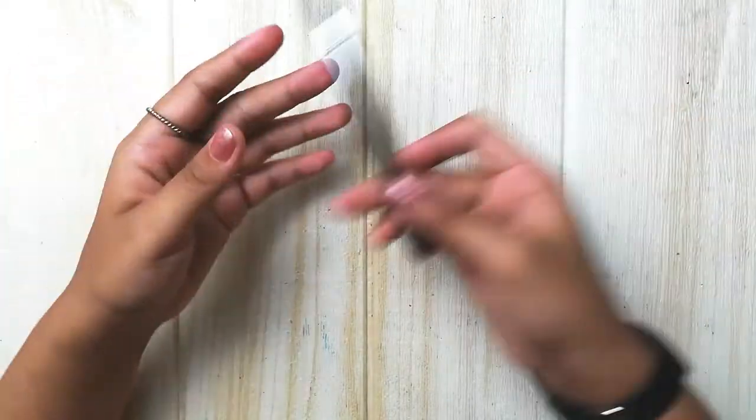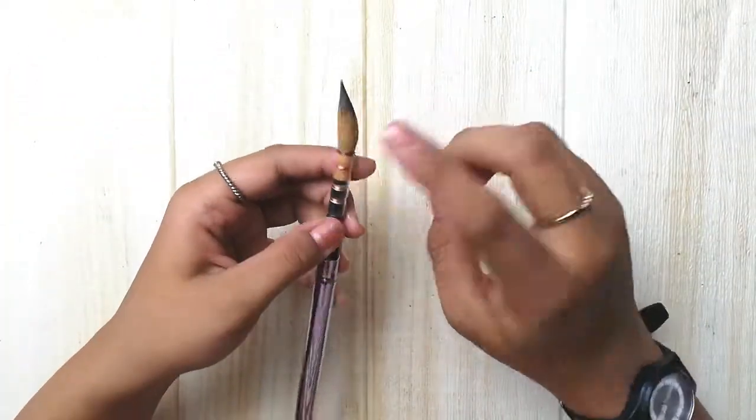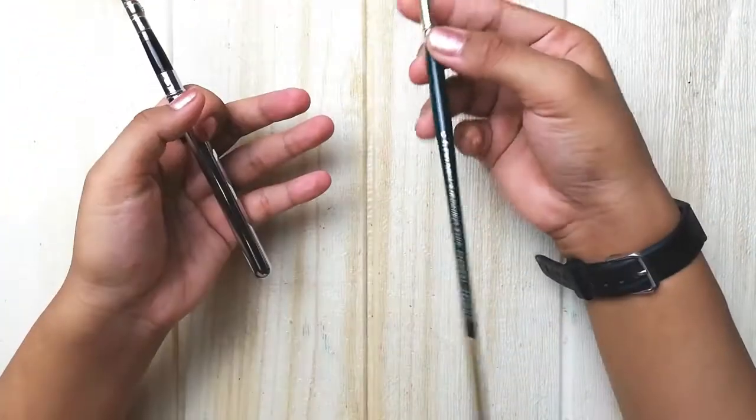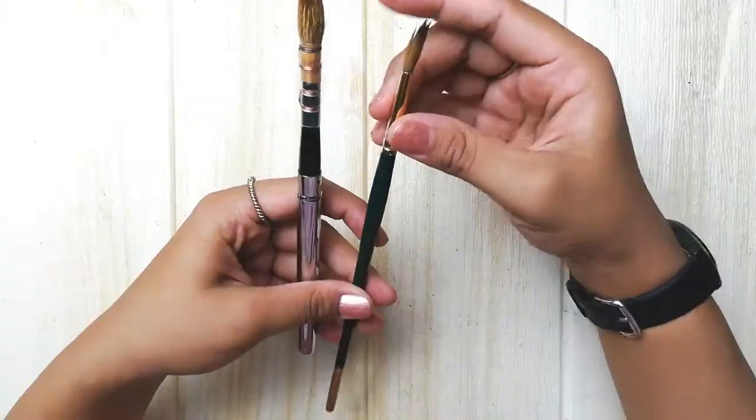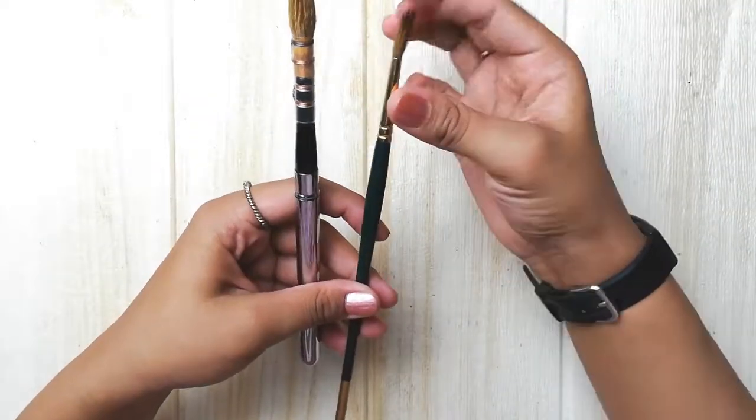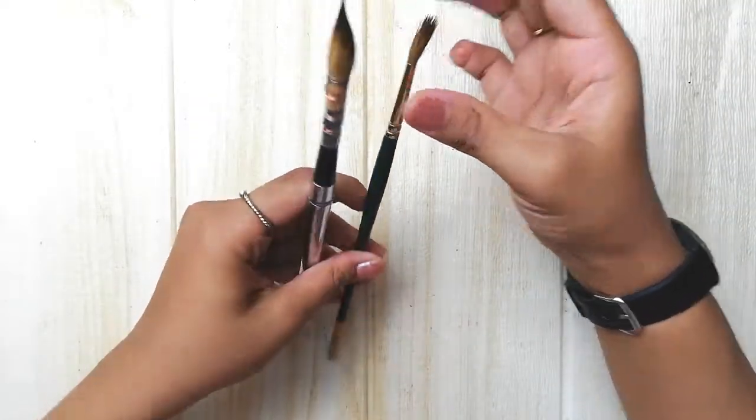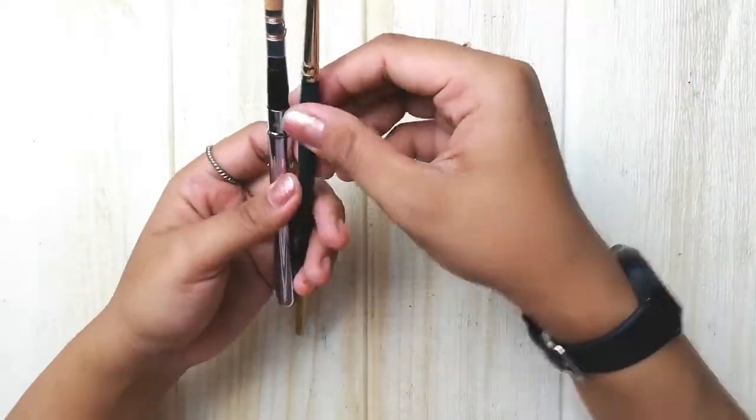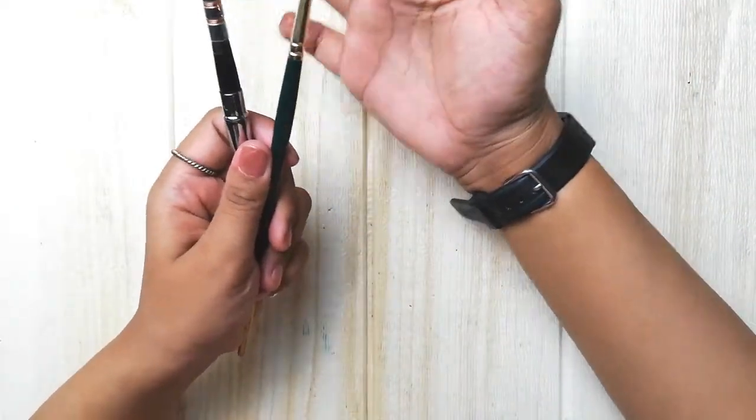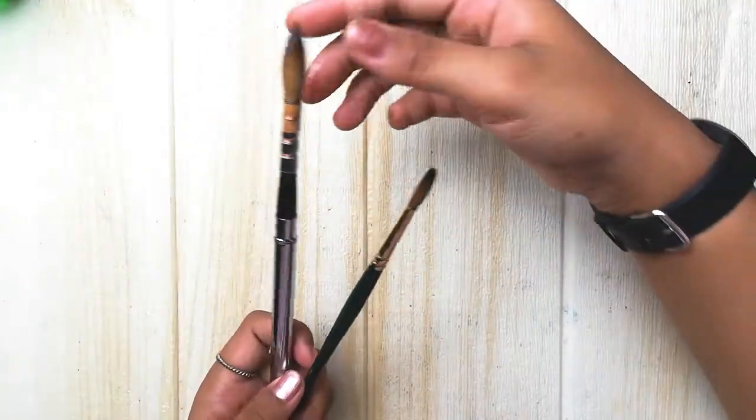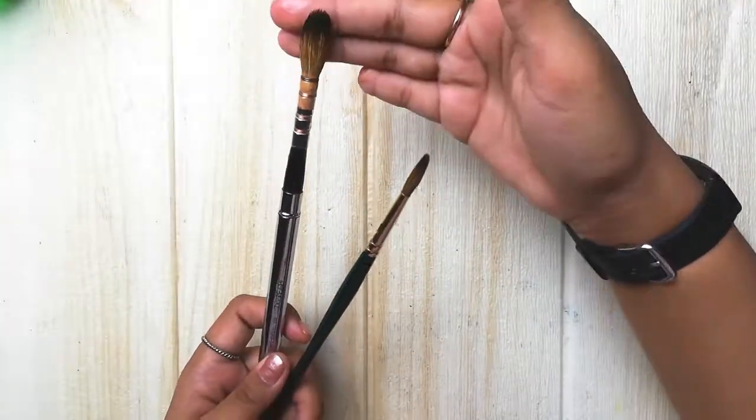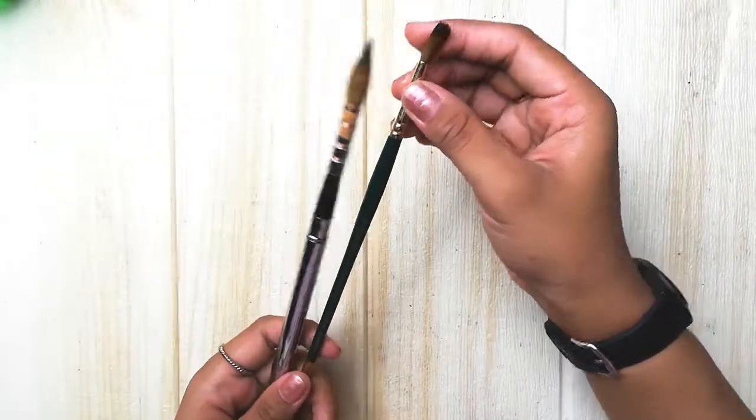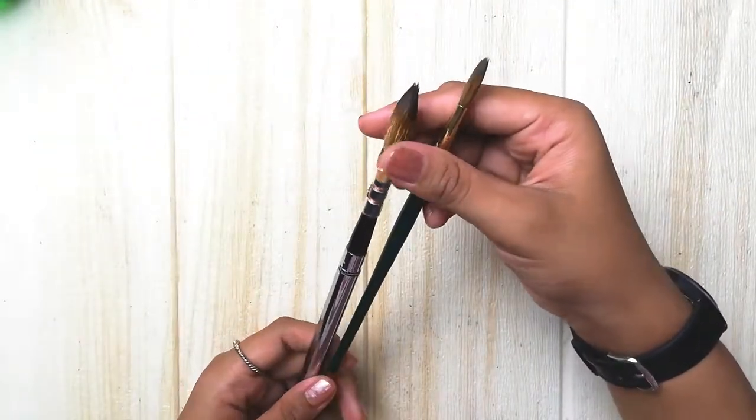For comparison, they claim that this is a sable brush, and I also have a sable brush right here. This is Pro Arte. This one is kind of springy, and this one as well, they behave the same. When you touch it, you will see that the ArtSecret one is a lot softer than the Pro Arte one, which is a really good thing.